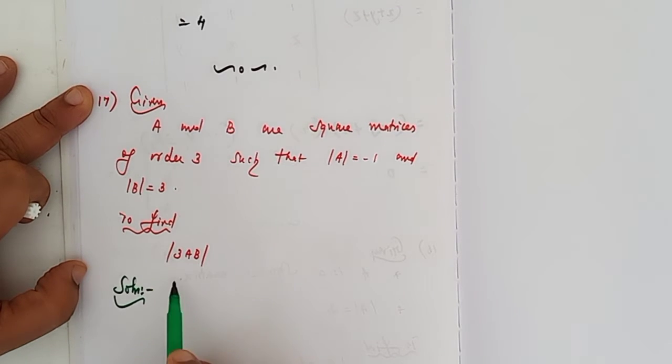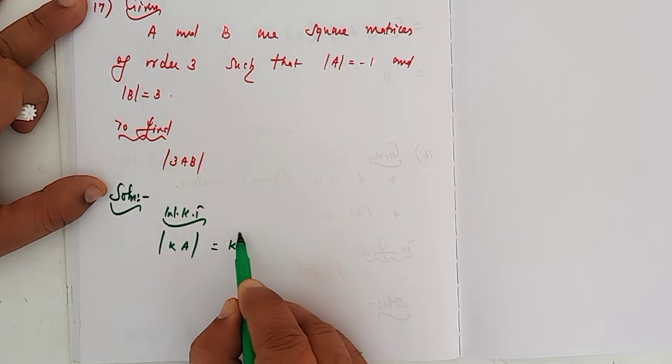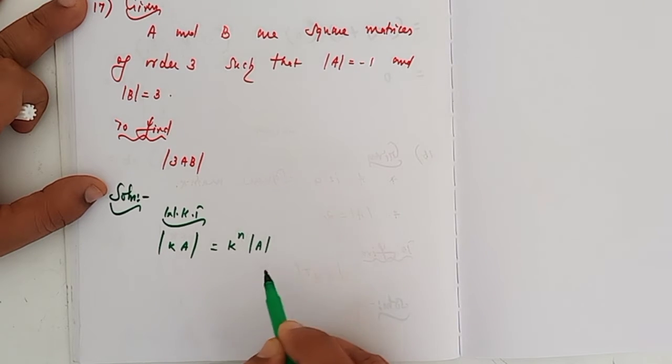You are asked to find out the determinant of 3AB. We know that determinant of kA, where k is a scalar, equals k power n times determinant of A.